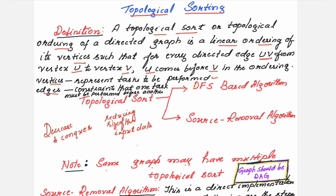In simpler words, in the graph whatever edges you have — suppose if you have a directed edge from u to v — then when ordering the vertices, u should be written first and then v. You cannot write v first and then u. That would not be a correct ordering; the correct ordering is u, v.